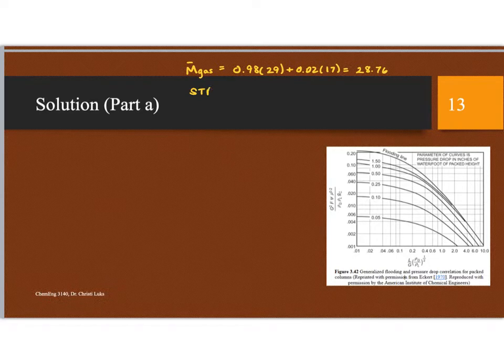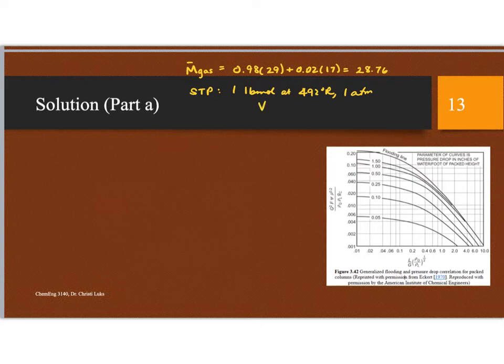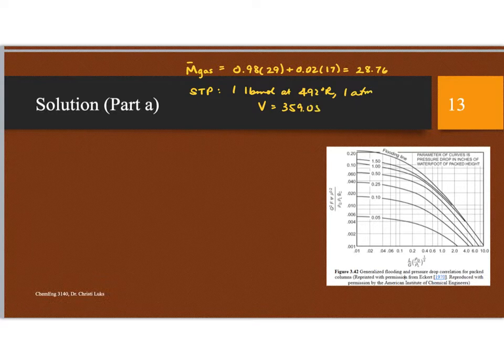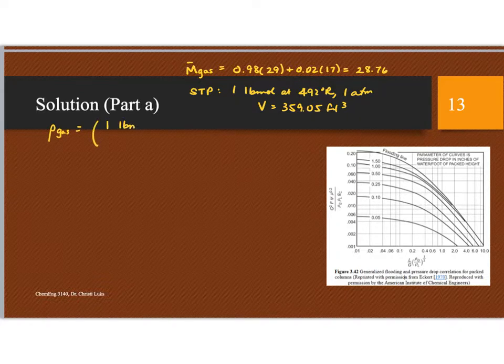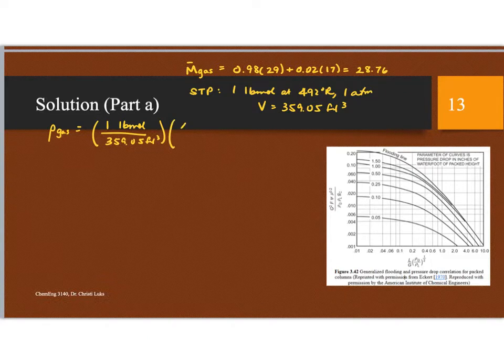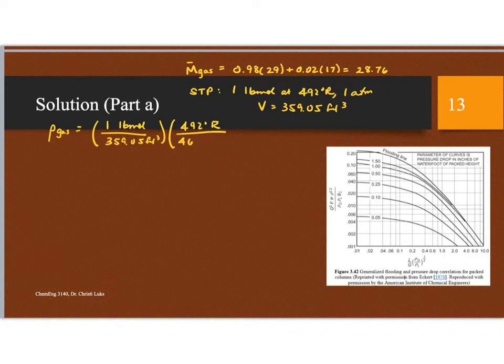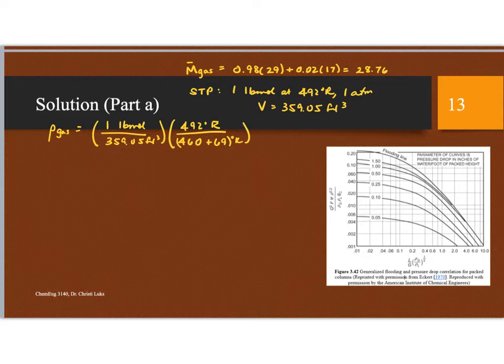Now, STP, just as a reminder, is 1 pound mole at 492 degrees Rankine and 1 atmosphere. And at that case, the volume is 359.05 cubic feet. So my density of my gas, I can determine because 1 pound mole per 359.05 cubic feet is at 492 degrees Rankine. And my actual state is at 460 plus 69 degrees Rankine. And I have my molecular weight.